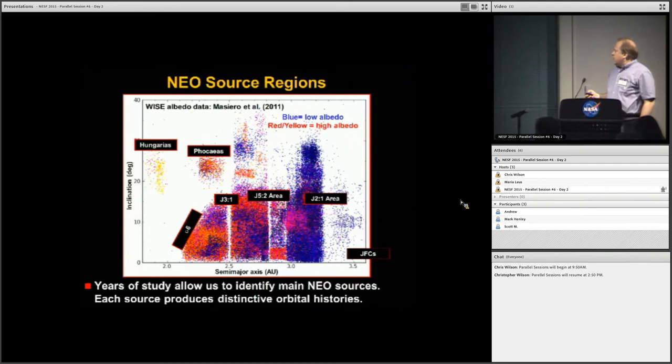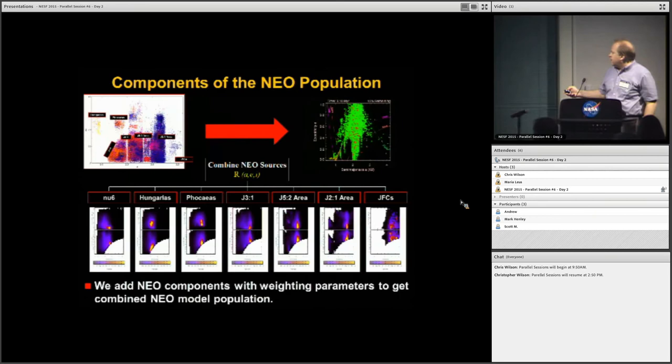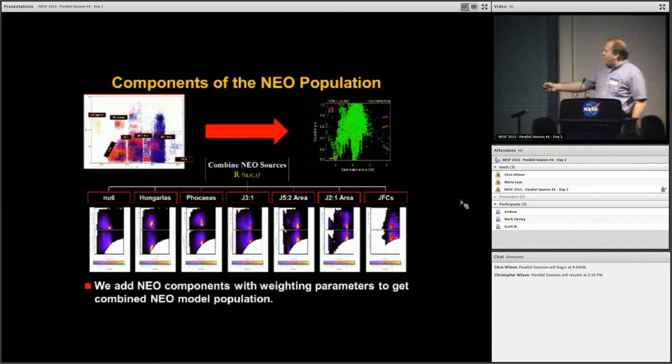Through years and years of study and lots and lots of dynamical integrations, we've been able to break the asteroid belt down into some major supply routes for near-Earth objects. I've put some names on here, but I'm not going to go through them because I don't have time. You can break this down into a few sites or 30 sites or 100 sites. But really we're just trying to get a dynamically distinct region that produces near-Earth objects. So what we do is we integrate objects out of those regions, and then every one of them gives us a very separate probability distribution. If we add all these up and we've done it absolutely correctly, you have the near-Earth object population. It's really that simple.